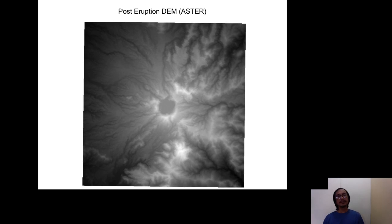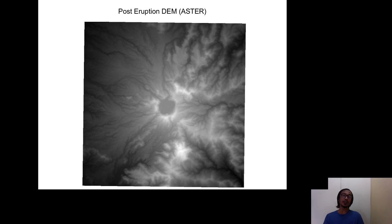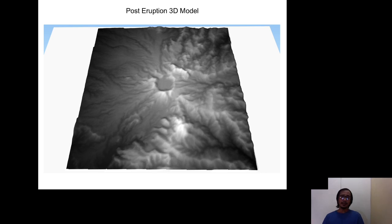The next thing I did was compare the pre-eruption and post-eruption. For the post-eruption, it was easier because I just downloaded ASTER data, which is free and at 30-meter resolution, and it is already a digital elevation model — so that spared me from digitizing a present topographic map. From this file, I produced the post-eruption 3D model. At the center you see a depression — that's the crater lake formed because of the eruption.